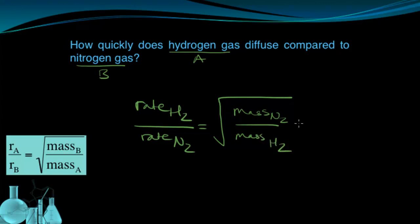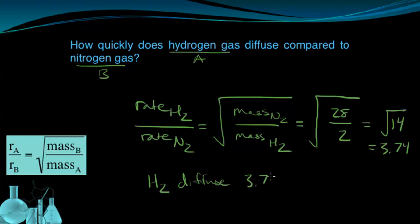So if I come up with the formula masses, I can simplify this expression to be the mass of nitrogen, which is 28, over the mass of hydrogen, which is 2, and that gives me the root of 14, which is 3.74. That tells me that hydrogen gas can diffuse 3.74 times faster than nitrogen gas.